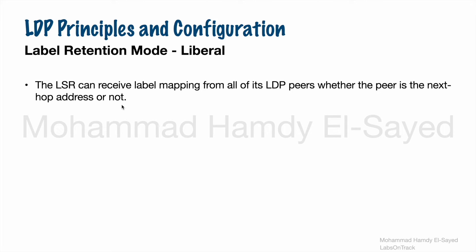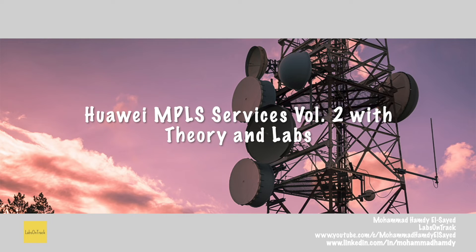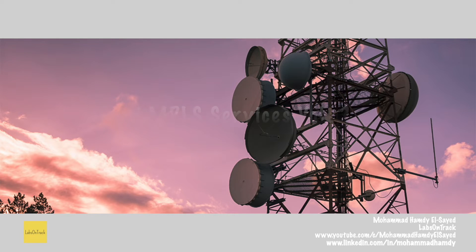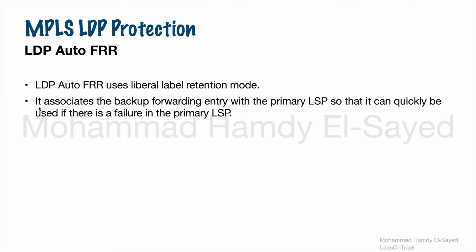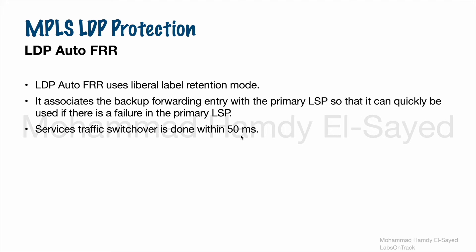This is used in case the main LSP path goes down. The LSR can associate a backup forwarding entry based on the liberal label retention mode with the primary LSP, so that it can quickly be used if there is a failure in the primary LSP. The LSR can keep both the main and backup LSPs, and with LDP Auto FRR, services traffic switchover is done within 50 milliseconds, which is a very good restoration time especially for sensitive services traffic.